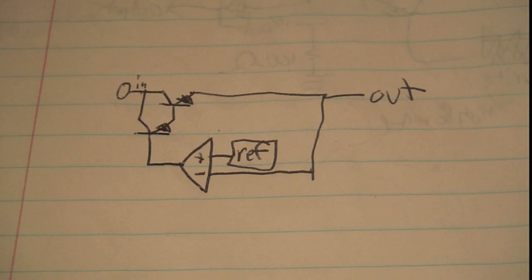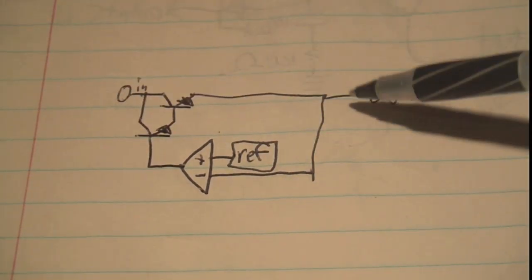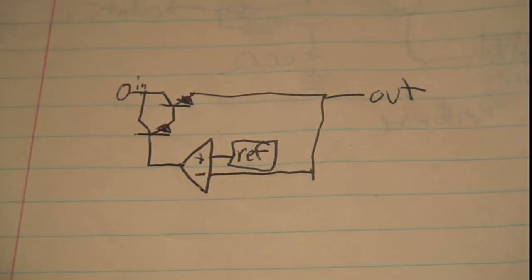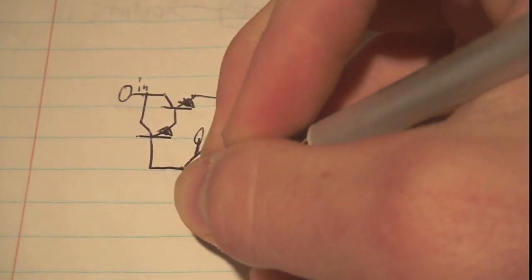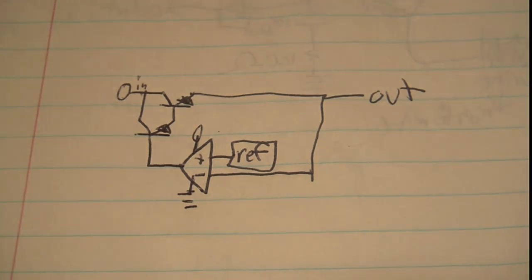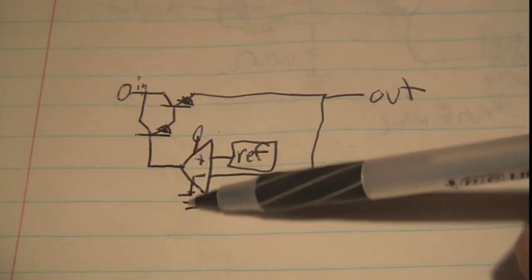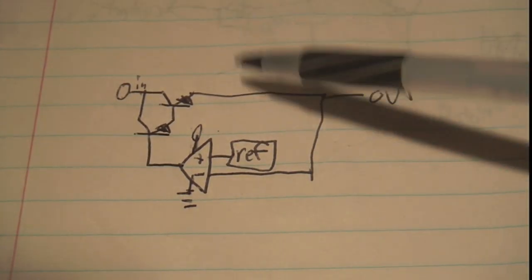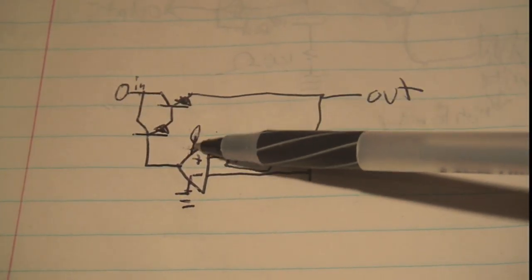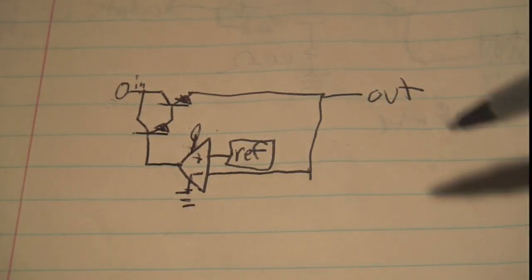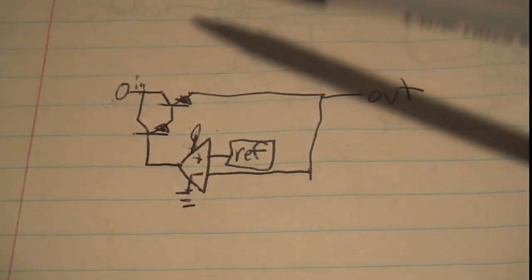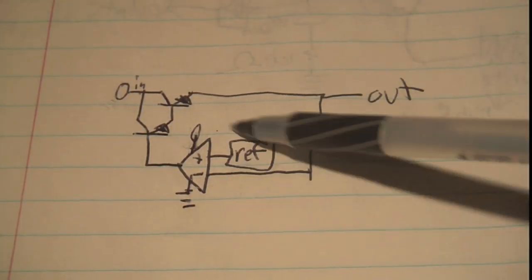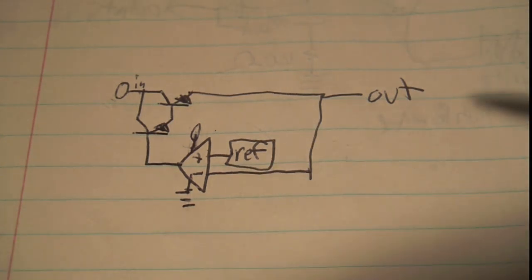So here's the inside of a regulator. This is a simplified version, but you can see here's the input of the regulator. Here's the output of the regulator. The ground terminal, you would normally have the op amp hooked up. Usually it's not standard to write the power connections on an op amp, but you would have ground and this connected to the input. So the supply of the op amp connected to the input. And all this is is a feedback loop. So you have a Darlington array of an NPN transistor, you have an op amp, a voltage reference, and that's it.